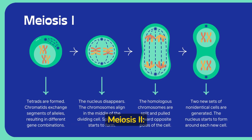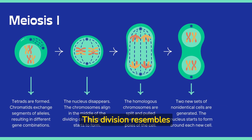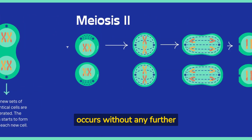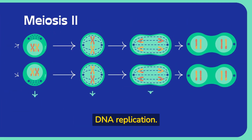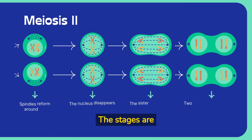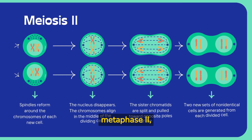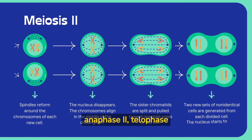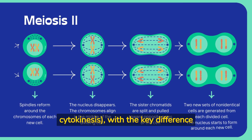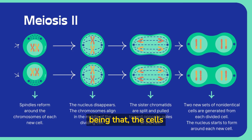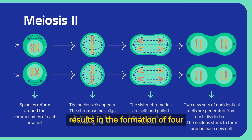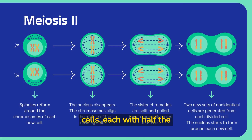Meiosis II resembles mitosis but occurs without any further DNA replication. The stages are similar: prophase II, metaphase II, anaphase II, telophase II, and cytokinesis, with the key difference being that the cells involved are haploid. Meiosis II results in the formation of four genetically unique haploid cells, each with half the number of chromosomes as the original cell.